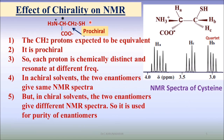Let us study the effect of chirality on NMR. Most amino acids are chiral molecules — they have an asymmetric carbon atom. For instance, cysteine is an amino acid. If you look at the 2D structure, the methylene protons appear equivalent or identical.